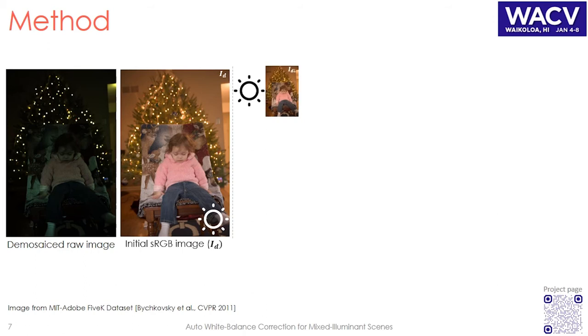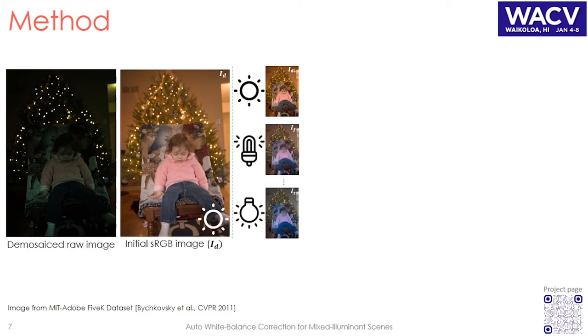Next, we downsample the raw image and process it through the camera with a number of fixed white balance settings, for example incandescent and fluorescent.